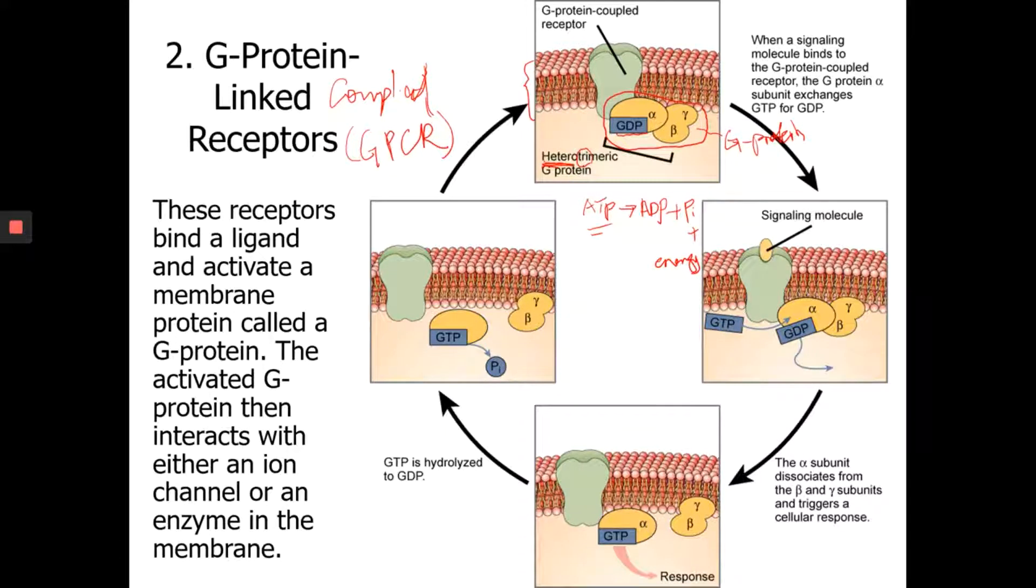Now the GDP, GTP are similar to ATP, ADP. But instead of adenosine triphosphate, now you have the guanosine triphosphate or guanosine diphosphate. So that's what the GDP and GTP stand for.